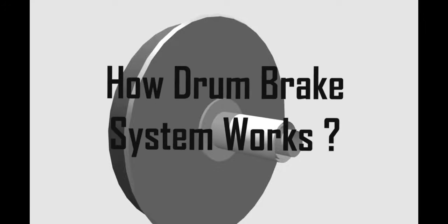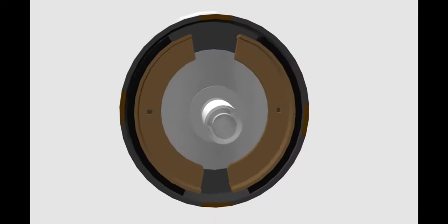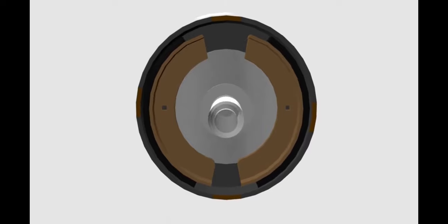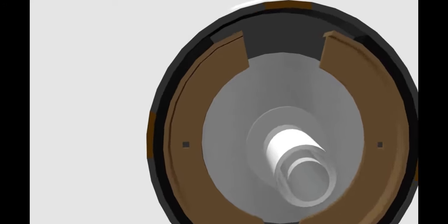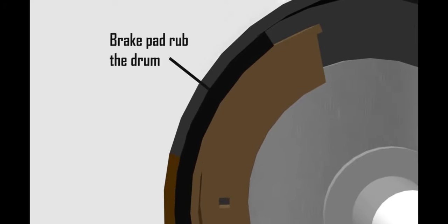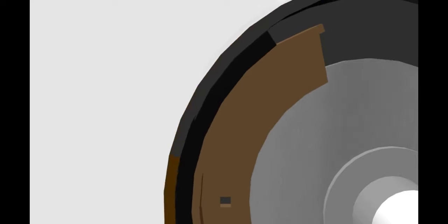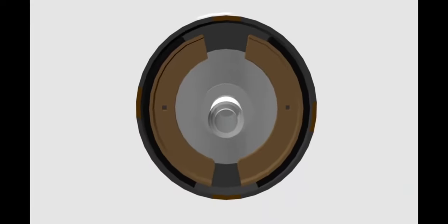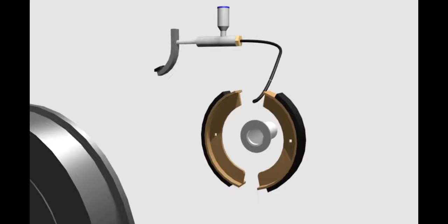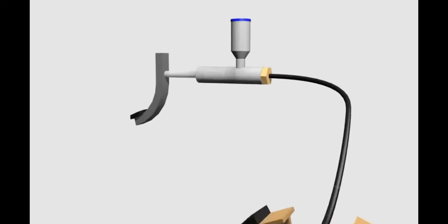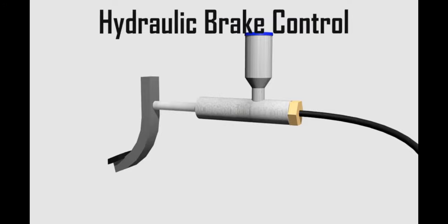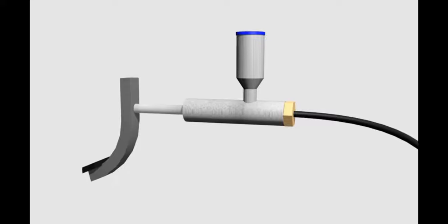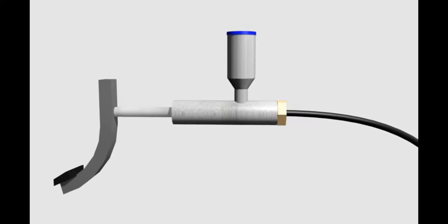How do drum brakes work? There are two brake shoes; both splay outward until the surface of the brake pad touches the inner surface of the drum, causing friction. This friction makes the drum stop spinning immediately. This is done through the brake pedal — for recent cars, the brake control mechanism uses a hydraulic system.